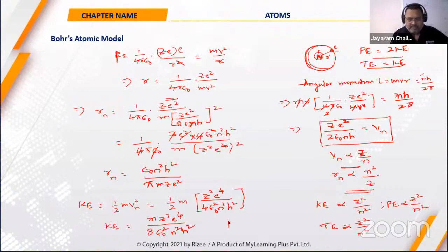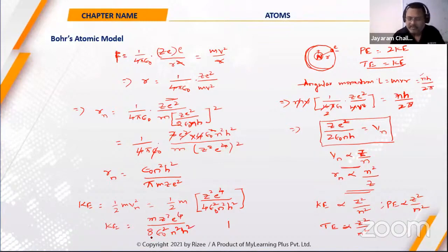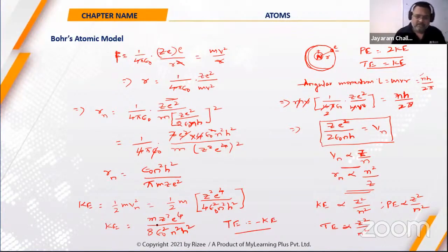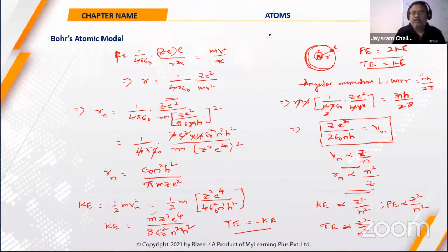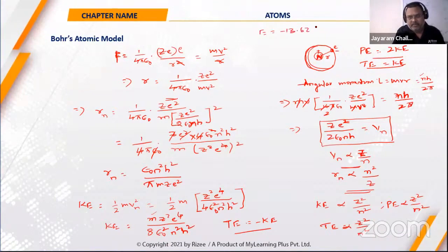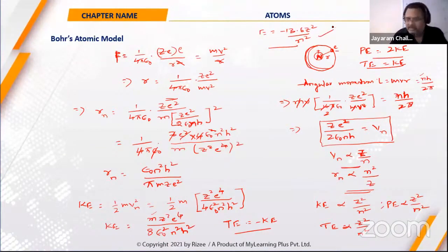Solving with all constants substituted — mass, charge, epsilon, Planck's constant — the total energy formula becomes E = −13.6 Z²/n² electron volts. This is the same formula you use in chemistry, first year, first chapter. We now have five key relationships: velocity, radius, kinetic energy, potential energy, and total energy.